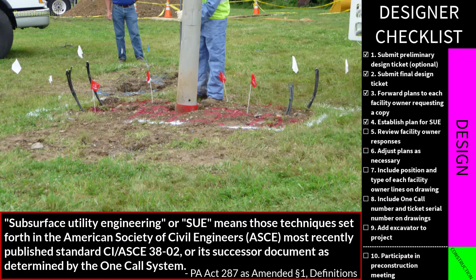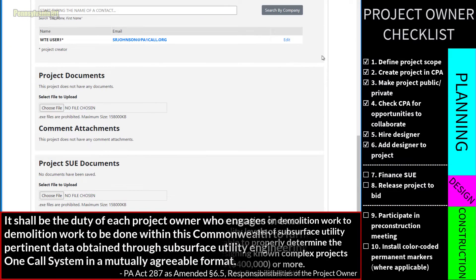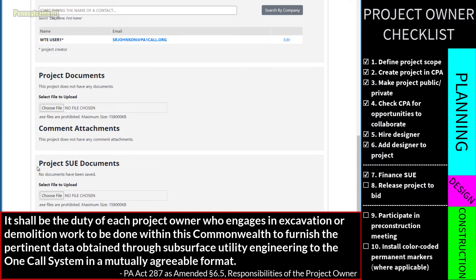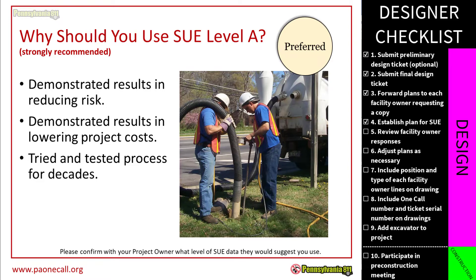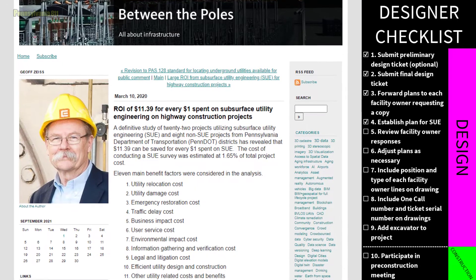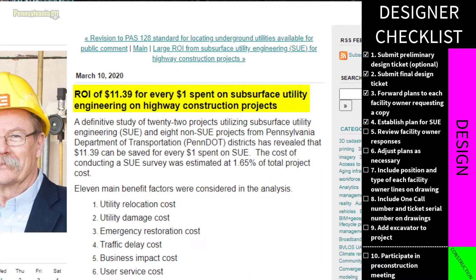When a project costs $400,000 or more, sufficient quality levels of SUE must be used. Regardless of project budget, it is the project owner's responsibility to furnish pertinent data obtained through SUE to the one call system by uploading it directly to the CPA project. A 2020 PennDOT study found that for every $1 spent on SUE, they saw a return on investment of $11.39. So regardless of the size and complexity of your project, SUE can be your best friend in controlling costs.